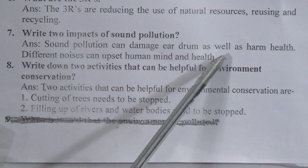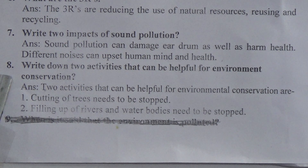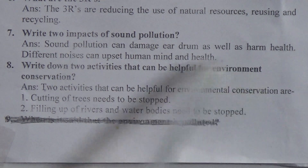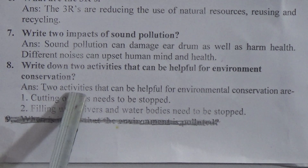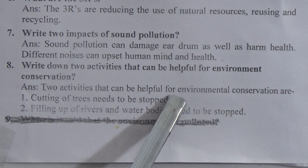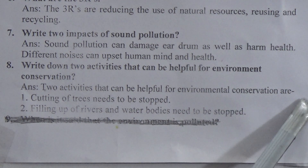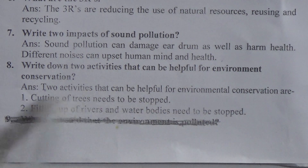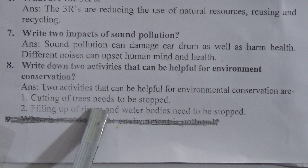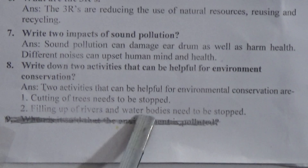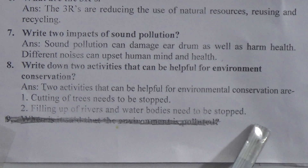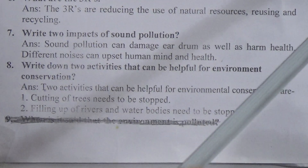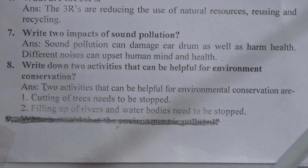Question 8: Write down two activities that can be helpful for environmental conservation. Answer: Two activities helpful for environmental conservation are — first, cutting of trees needs to be stopped; second, filling up of rivers and water bodies needs to be stopped.